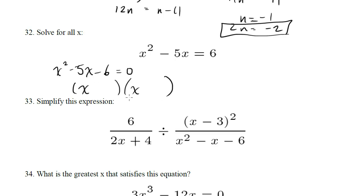So x and x. We need two numbers that multiply out to negative 6 and add up to negative 5, so that's going to be minus 6 and plus 1. Negative 6 plus 1 is negative 5.